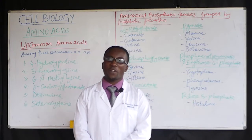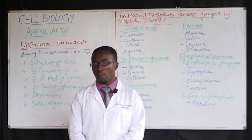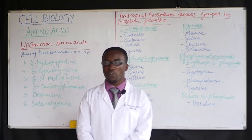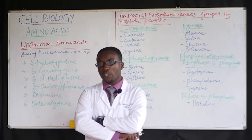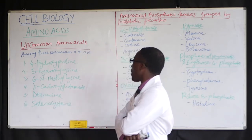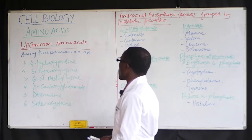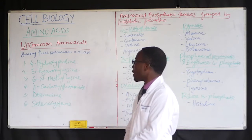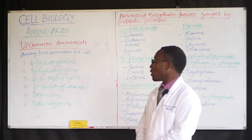Welcome to this sub-chapter where we discuss uncommon amino acids and their functions. In addition to the 20 common amino acids, proteins may contain residues created by modification of common residues already incorporated into a polypeptide. These include 4-hydroxyproline, 5-hydroxylysine, 6-N-methyllysine, gamma-carboxyglutamate, desmosine, and selenocysteine.